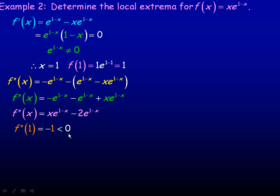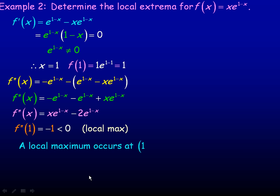Since f''(1) = -1, which is less than 0, we have a local maximum. A negative second derivative means the graph is concave down — the first derivative has gone from positive to negative. So a local maximum occurs at the point (1, 1).